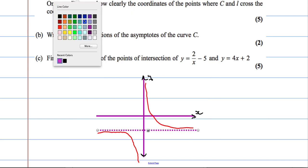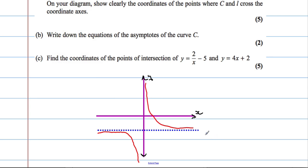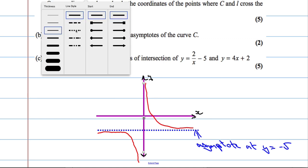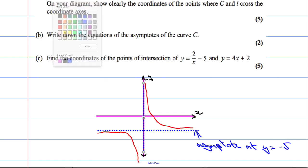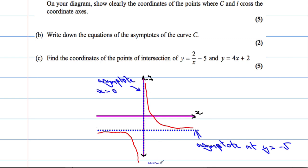Asymptote there. Let's make it blue. Y equals negative 5. So we've got an asymptote when y is negative 5, and we've also got an asymptote when x is 0. So we've got an asymptote here. X equal to 0. So there's our two asymptotes for that function.